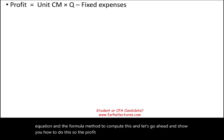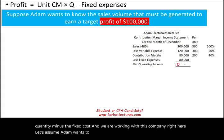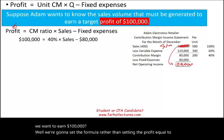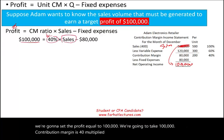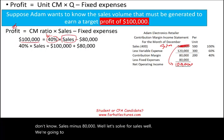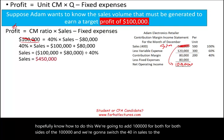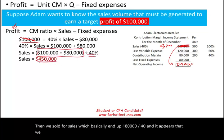Let's assume Adam wants to earn $100,000 in profit. What should sales be? We set profit equal to $100,000: 100,000 = 40% × Sales − $80,000. Solving, we add $80,000 to both sides: $180,000 = 40% × Sales. Dividing $180,000 by 0.40 gives required sales of $450,000.